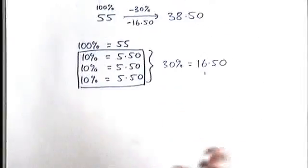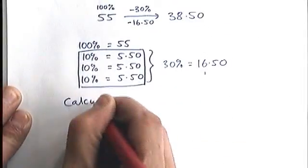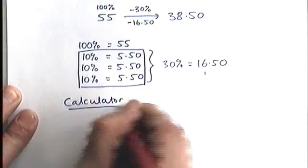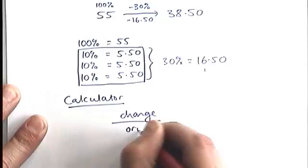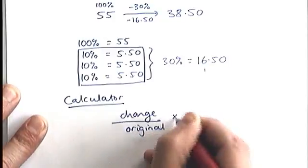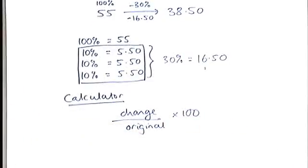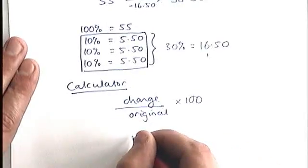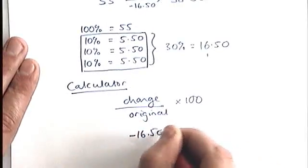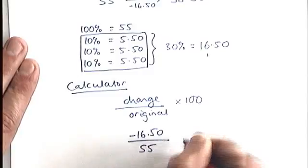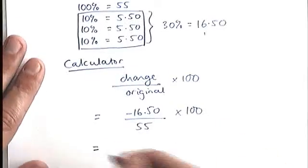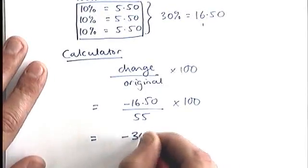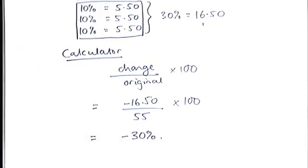Once again, if you do have a calculator, you might like to use the formula. The formula, remember, is change divided by original times 100. The change in the price here was 16 pounds 50. The original is 55 times it by 100. And again, if you type that on your calculator, you should get minus 30%.